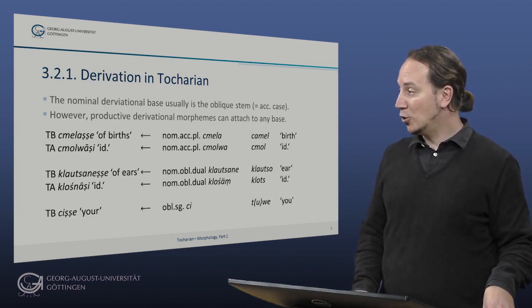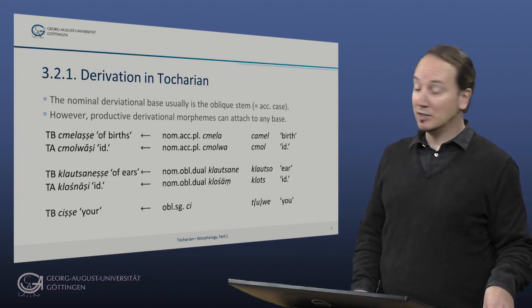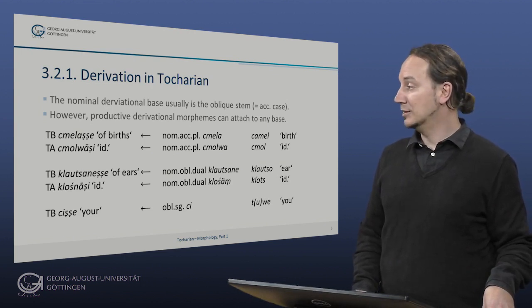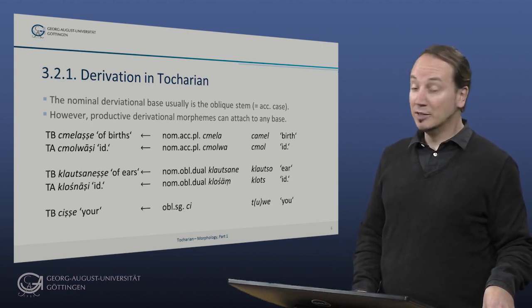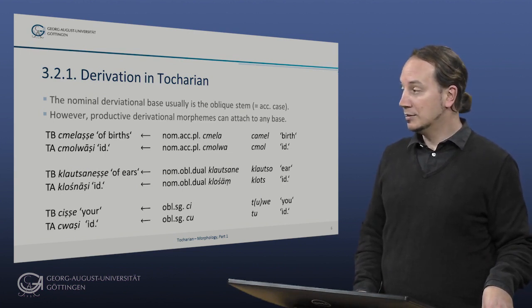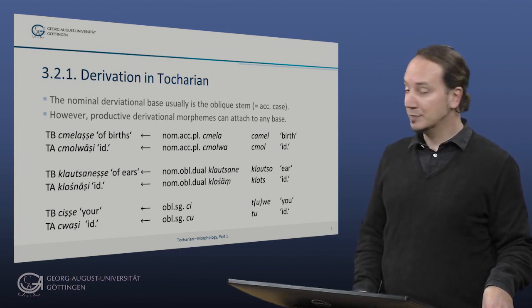There is also an interesting case: 'klauzanjesche' meaning 'your', derived from the oblique singular of the pronoun 'tuve' meaning 'you'. This and the preceding examples already give a glimpse at the agglutinative traits of Tocharian.